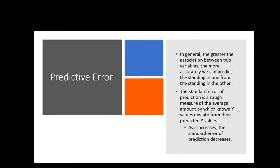For example, if I'm using study hours to predict your course grade, there may be some error. But if I'm using how many brothers and sisters you have to predict your test grade, that information is probably not as good at predicting your test grade as how many hours you studied. We would expect more error from number of siblings versus number of hours studied. The more association there is between the two variables, the less predictive error you're going to have.